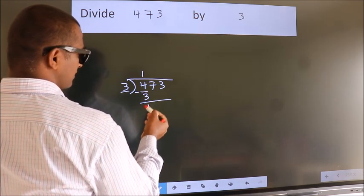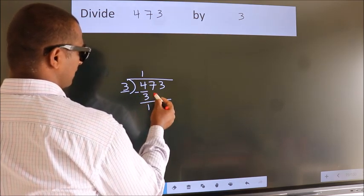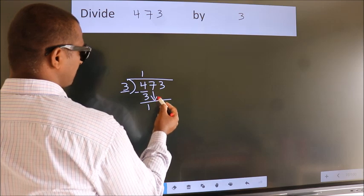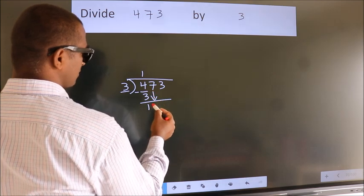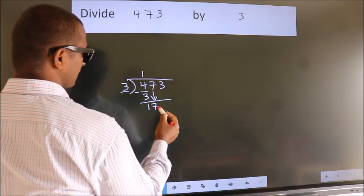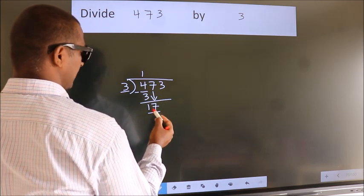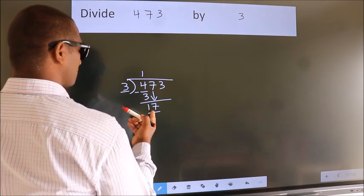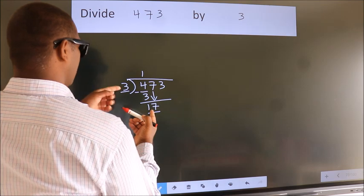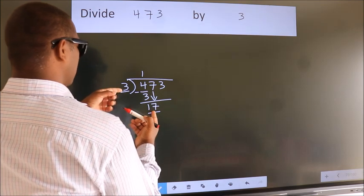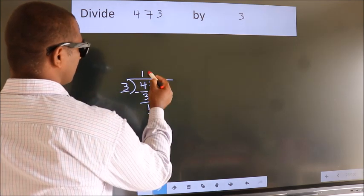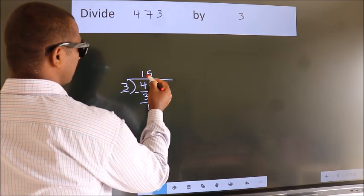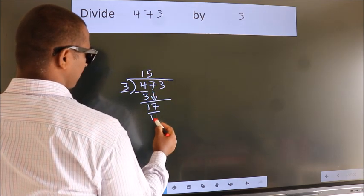After this, bring down the beside number. So, 7 down — so, 17. A number close to 17 in the 3 table is 3 5s, which is 15.